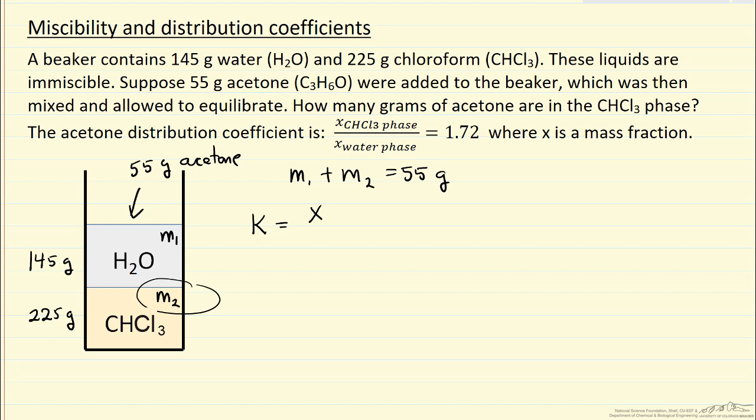So remember, this is the mass fraction of acetone in the dense phase and acetone in the water phase, the less dense phase. That's why it's on top in the beaker. This number is 1.72. So we can calculate mass fractions.